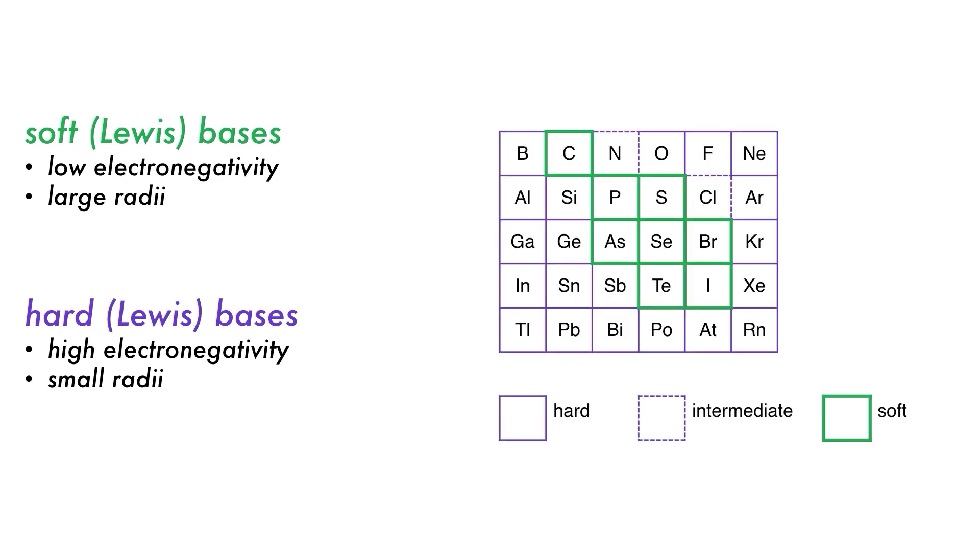Soft Lewis bases usually have low relative electronegativity for non-metals and large radii. Hard Lewis bases are generally the opposite with high electronegativity, small radii, and high charges. Due to the trends in size and electronegativity in the P-block, each type lies in a distinct region, which also helps us to remember them.